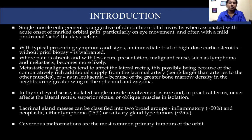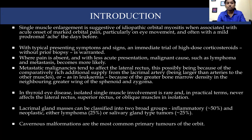Single muscle enlargement is suggestive of idiopathic orbital myositis when associated with acute onset of marked orbital pain, particularly on eye movement, and often with a mild prodromal ache in the days before. With typical presenting symptoms and signs, an immediate trial of high-dose corticosteroids without prior biopsy is warranted. Where pain is absent and with a less acute presentation, malignant causes such as lymphoma and metastasis become more likely. Metastatic malignancies tend to affect the lateral rectus most commonly because of the comparatively rich additional blood supply from the lacrimal artery, which is larger than arteries to the other extraocular muscles. In leukemia, this is due to the greater bone marrow density in the neighboring greater wing of sphenoid.